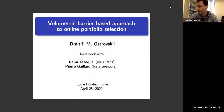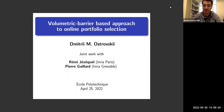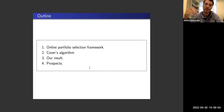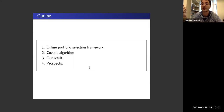This problem is a pleasure to talk about because the problem statement is clear and our contribution is not that hard to phrase. The outline: we'll be talking about online portfolio selection today. I will first present the framework of online portfolio selection introduced by Cover in the early 90s, then give some intuition about his algorithm, which was a milestone in solving the problem.